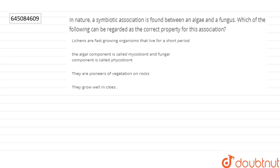The question says: In nature, a symbiotic association is found between an algae and a fungus. Which of the following can be regarded as the correct property for this association? Lichens are fast-growing organisms that live for a short period.